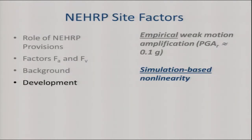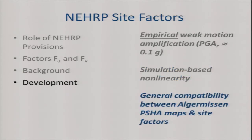Committees looked at the regression results, came up with plateaus to use for different site categories, and defined the factors for the weak motion condition. Simulations — SHAKE runs and similar — were then used to develop nonlinearity and bring the factors up to stronger input motion levels. Given what they knew at the time, they had hard rock ground motion maps, site factors referenced to similarly hard rock, so everything was compatible. It was a great piece of work that got best paper awards and lots of acclaim, justifiably.